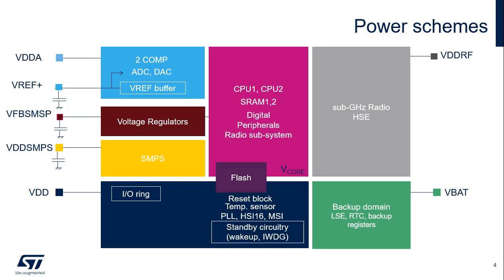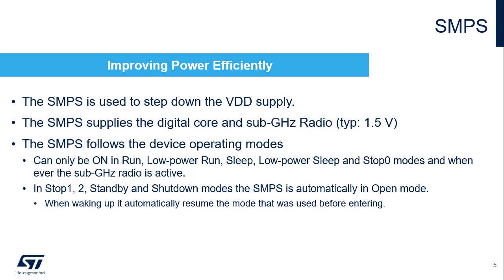STM32WL5 features several independent supplies for peripherals: VDDA for the analog peripherals and VDDRF for the sub-gigahertz radio. The internal reference voltage used by the analog block can be output on the VREF plus pin to supply external circuitry for the application. A backup battery can be connected to the VBAT pin to supply the backup domain. The SMPS supplies the digital core and radio LDOs.